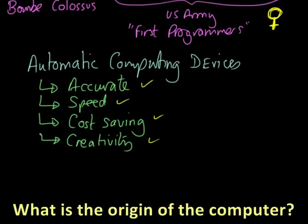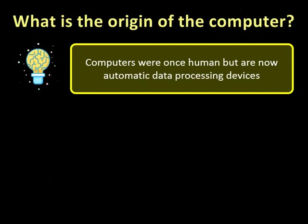So hopefully we've answered the question. Let's just review where we were at the beginning. What was the origin of the computer? Computers were once human, but are now automatic data processing devices.